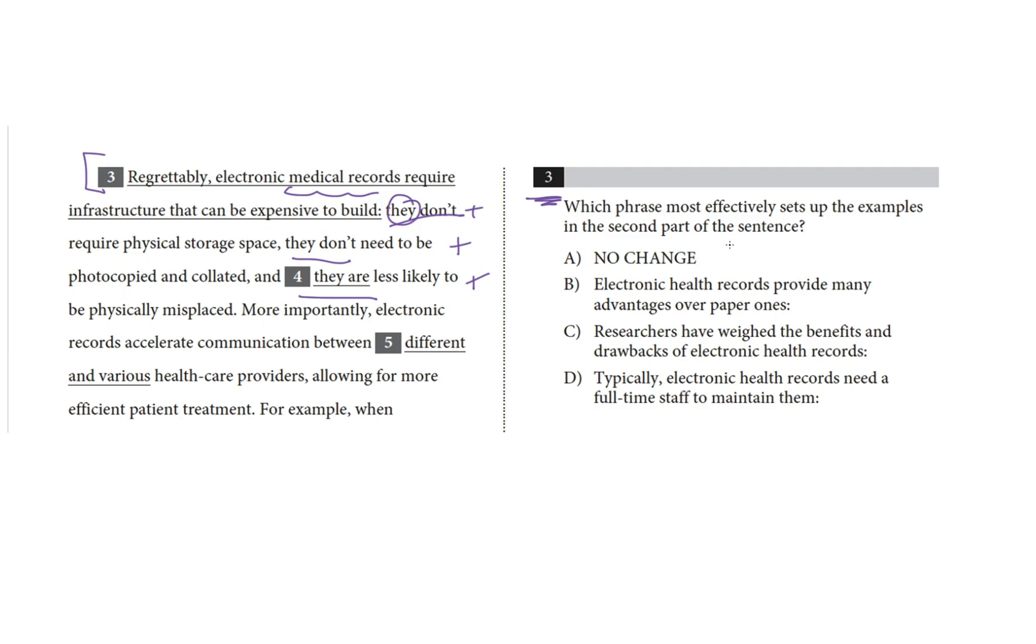So, okay, so choice A, no change. Regrettably, well, that's negative right off the bat. Regrettably, electronic medical records require infrastructure that can be expensive to build. Okay, so yeah, that's a negative choice. I don't think this sets up our positive examples. Choice B, electronic health records provide many advantages over paper ones. That's positive. I bet this is our answer.